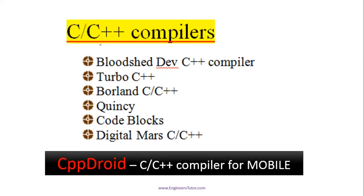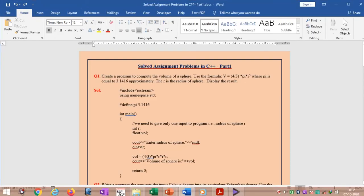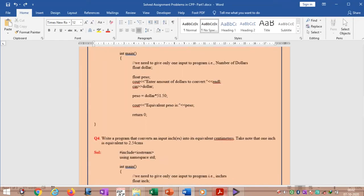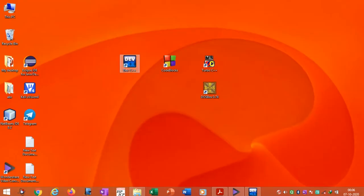In order to run C or C++ programs, we need compilers. These are the list of open source compilers. Please see the description of the video for download links for these compilers. If you are running programs on mobile, go to the Play Store and download C++. You can download DPP Droid. You can also download PDF solutions to the assignment problems from my website. See the description of the video for the download link.